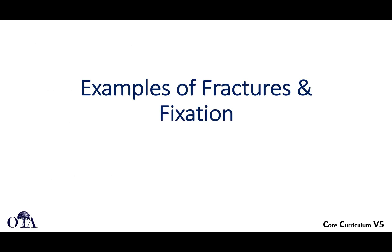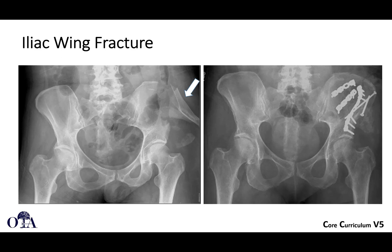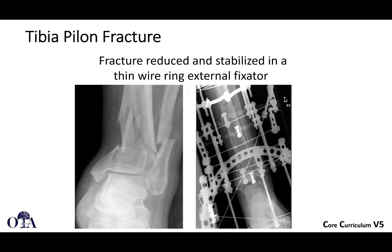Let's look at some x-rays and talk about fractures and fixation. Here's an example of an iliac wing fracture. In many orthopedic conditions you can use symmetry as a guide — we look at the other side and that does not look right, with multiple fragments. You can see this has been treated with open reduction internal fixation. There is some additional heterotopic bone there, or perhaps smaller fragments that coalesced, using internal fixation with plate and screws.